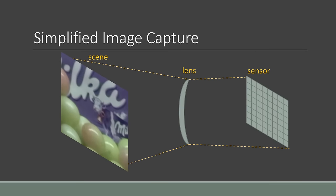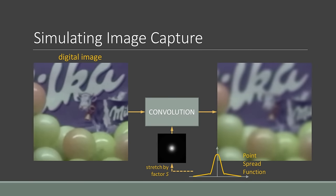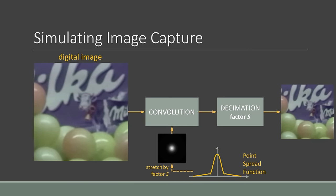We synthesize image pairs by emulating image capture in digital cameras wherein the scene is projected onto the sensor via a lens. This process is characterized by the lens PSF which is scaled according to the sensor's pixel density. To simulate image capture, we obtain a large digital image. We stretch the PSF by a factor S and use this convolution kernel to produce a blurred version of the image that we then decimate by the same factor.